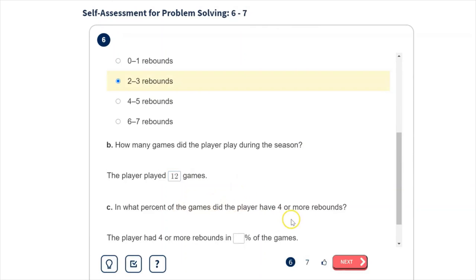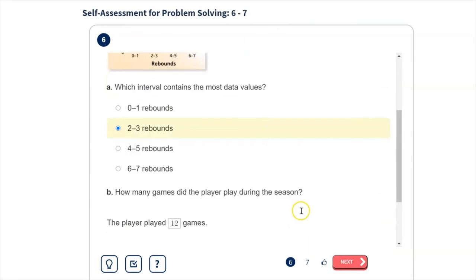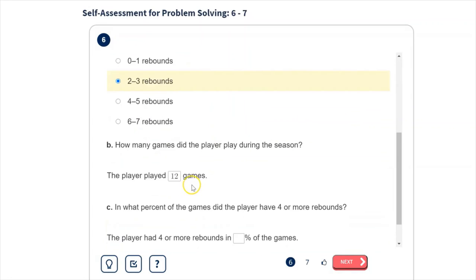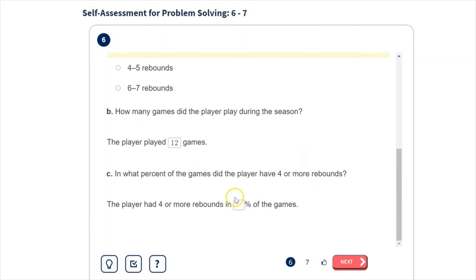In what percent of the games did the player have four or more rebounds? So four or more, that would include this one and this one, so that's three. So three games out of 12 games, that's three twelfths or one-fourth, which would be 25% of the games.